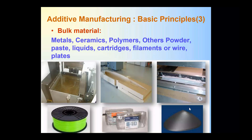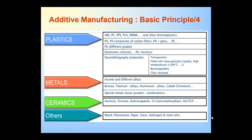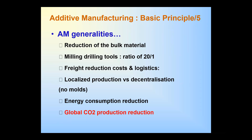We'll continue to see the specification for this main group of materials, with each individual part showing what kinds of more specific materials are involved. For instance, it could be mentioned that the last category includes hydrogel and stem cells, which is one of the most current and challenging applications. We'll pass to the next one and mention the general characteristics of this technology.